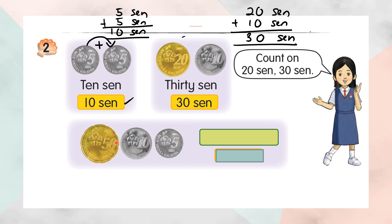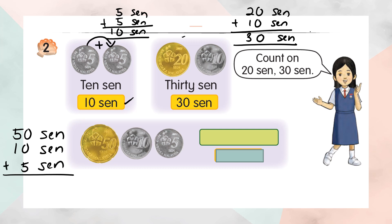Fifty cent plus ten cent plus ten cent. Zero plus zero is zero, zero plus five is five, and five plus one is six. So you will get sixty-five cent.